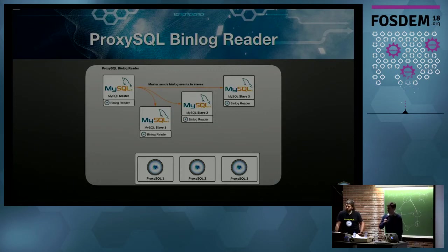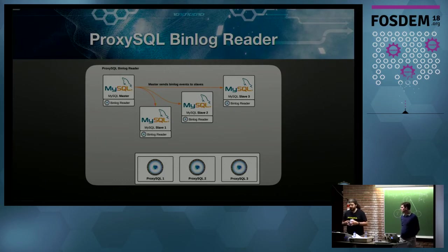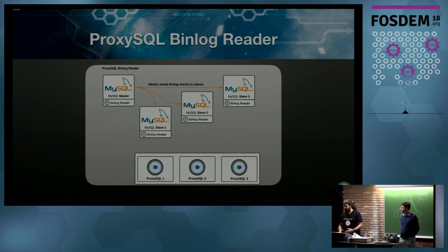When we say it strips the source information, we mean the server UUID. It will send it and then not resend it until it changes. Basically, it takes the status of the GTID executed on the server. As soon as a client — in this case ProxySQL — connects to this process, it will send the full GTID set. From that moment on, it will send the first GTID with the full server UUID and transaction ID, and then only send the transaction ID until a new UUID is encountered. This minimizes network bandwidth since it's designed to support hundreds of ProxySQL instances connecting to every database server.